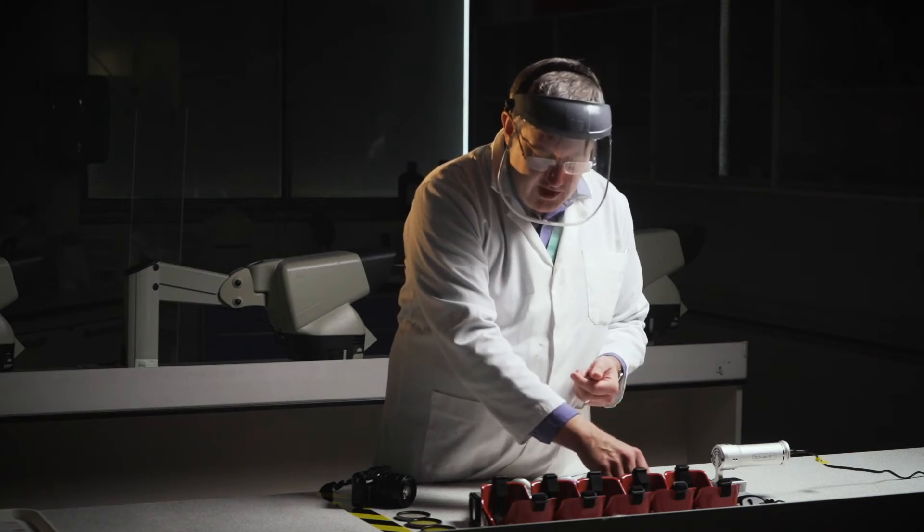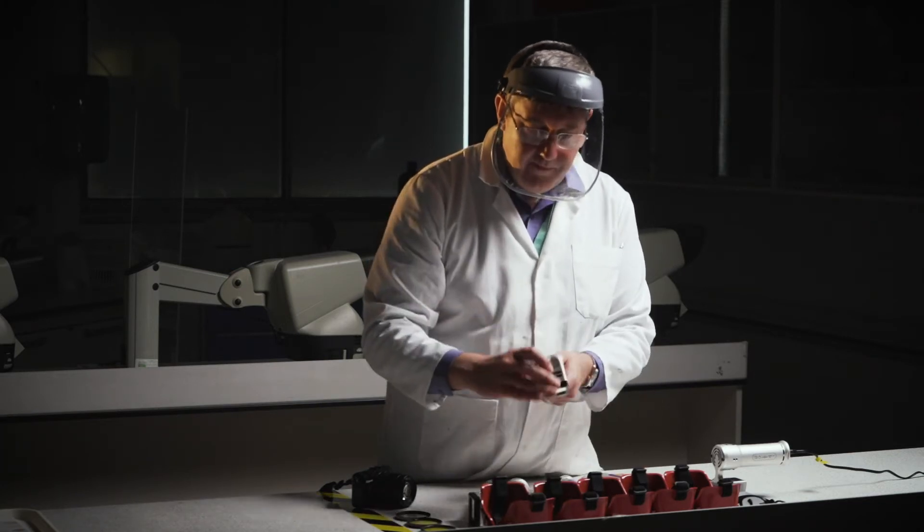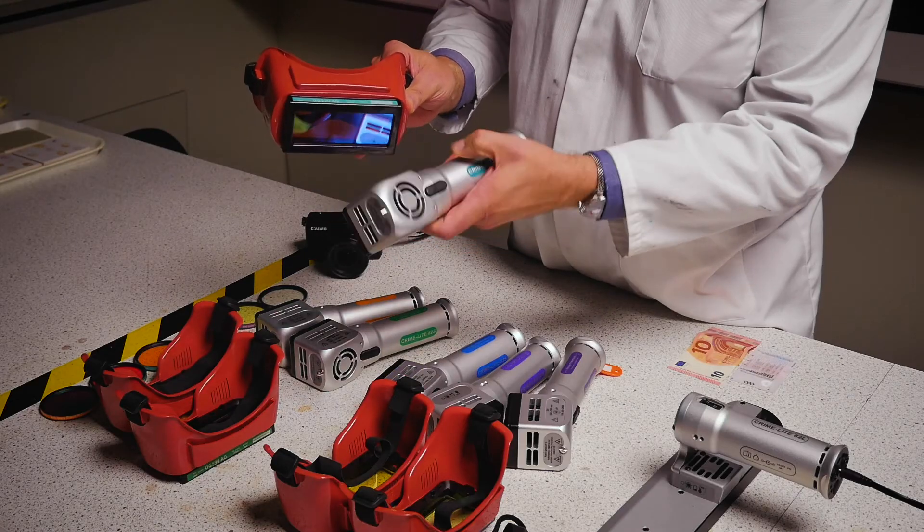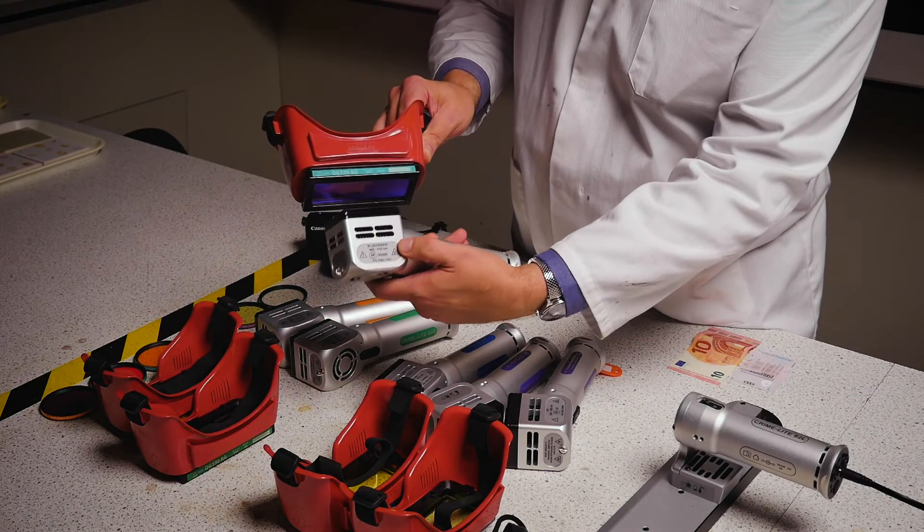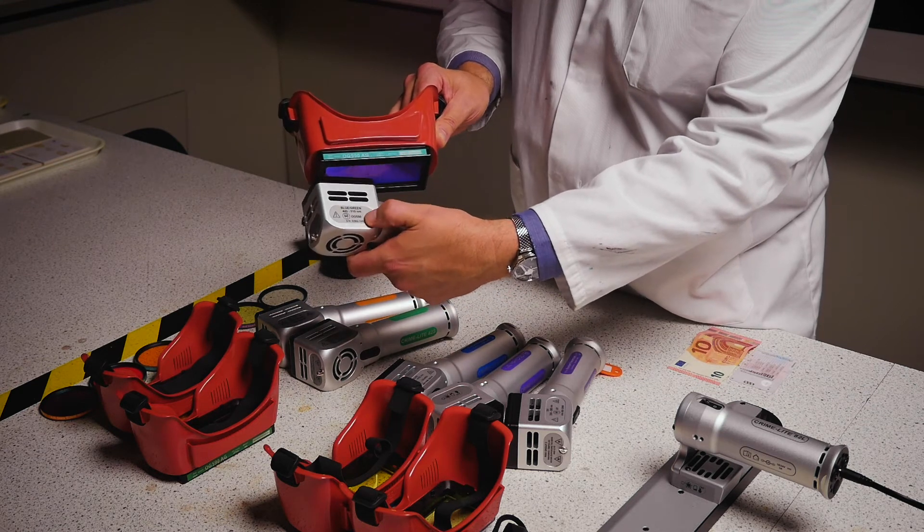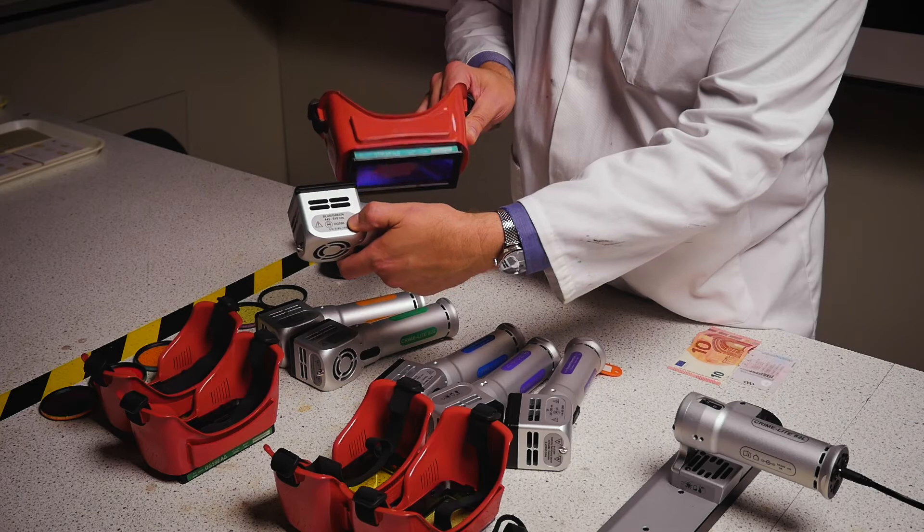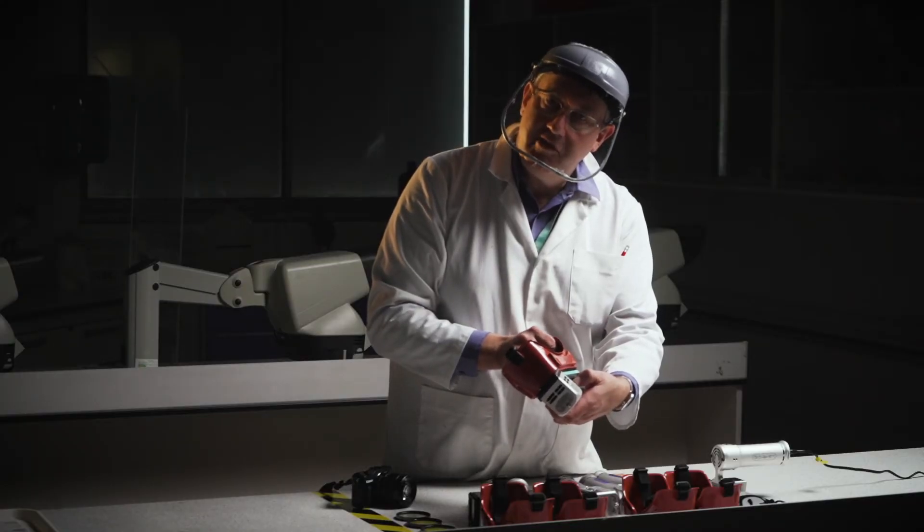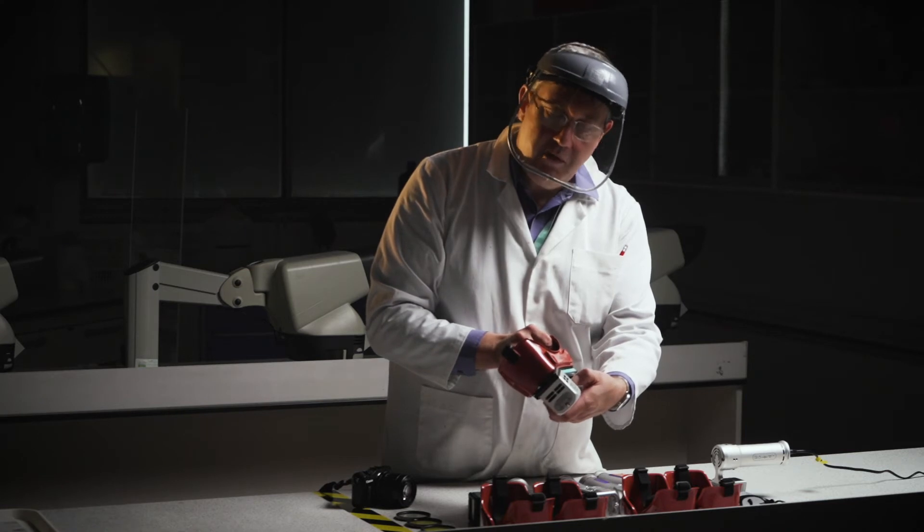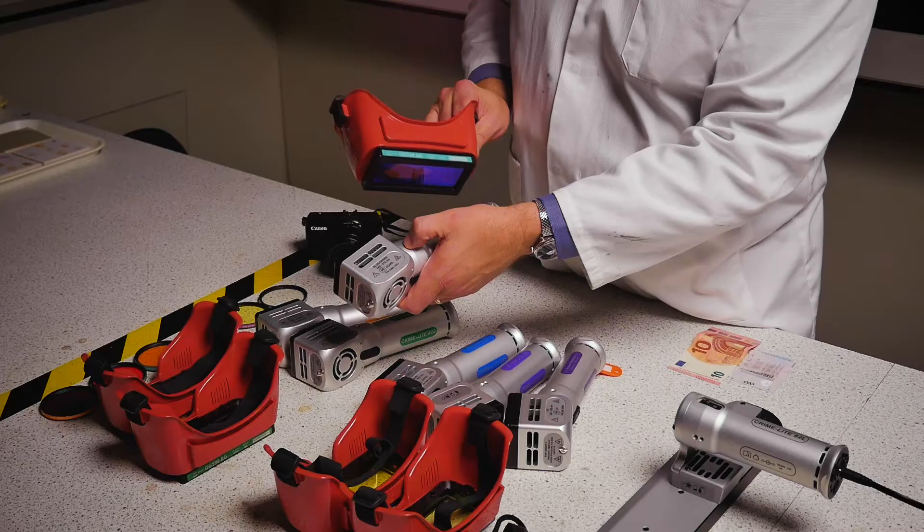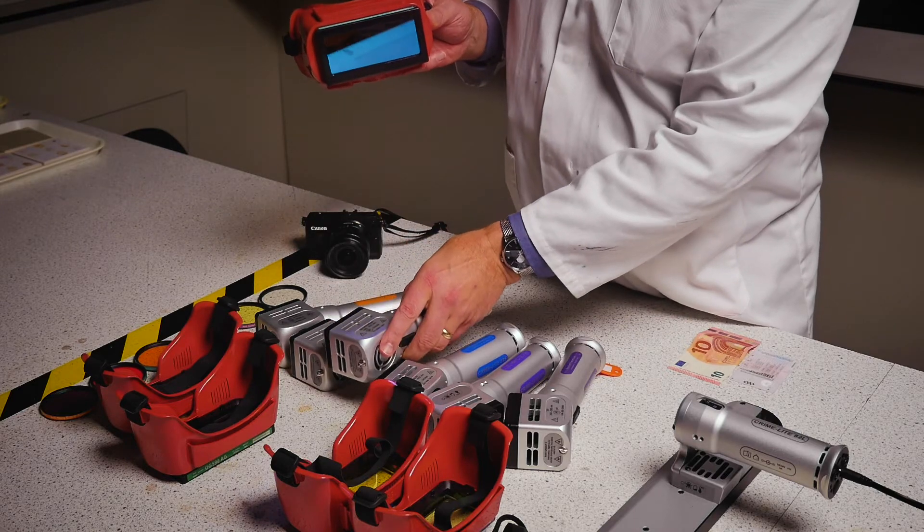If I look at another one, if I pick up the blue-green light source, again, we have a blue-green color code. It tells me on the side there that that's 455 to 510 nanometers, and I should be using OG550 goggles. And there you go, blue-green goggles, OG550 recorded on them. So it's really quite simple, if you look at the color coding, to select the appropriate goggles for the light source you're using.